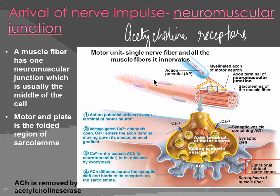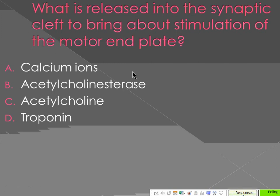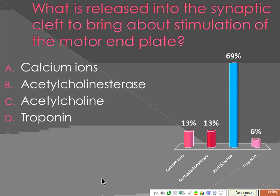In that video segment, you saw how acetylcholine bound to the receptors and sodium ions went in. Now let's do a few questions. What is released into the synaptic cleft to bring about stimulation of the motor end plate? The answer is acetylcholine — not calcium ions, not troponin.